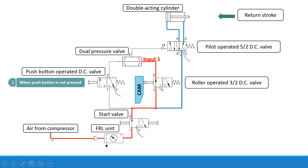Air from the compressor — the red line indicates the flow of air — enters into the FRL unit and then into the left envelope of the start valve. Now this is the roller operated 3x2 direction control valve. The cam is pressing this particular roller, and therefore we are obtaining the left envelope mode. So the air from this path goes over here and this is the first input that is provided to the dual pressure valve.